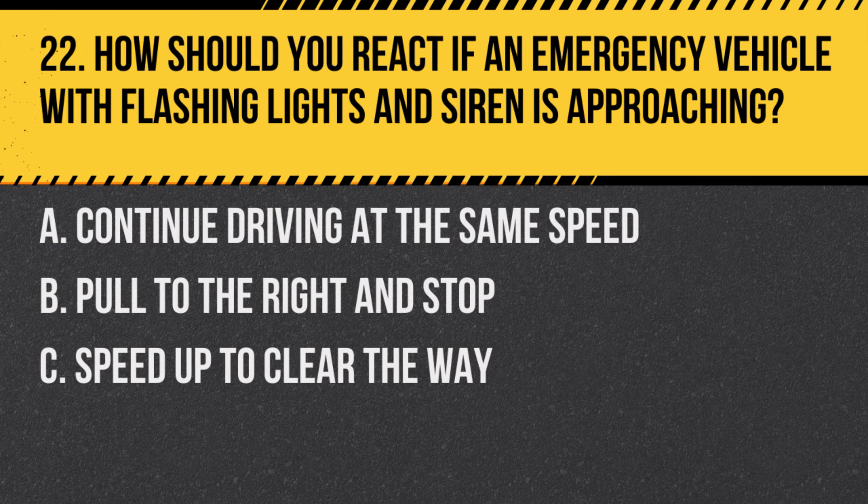Question 22: How should you react if an emergency vehicle with flashing lights and siren is approaching? A. Continue driving at the same speed. B. Pull to the right and stop. C. Speed up to clear the way. Answer: B. Pull to the right and stop. You should pull over to the right and stop when an emergency vehicle with flashing lights and sirens is approaching.